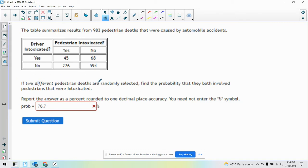Okay, so this says if two different pedestrian deaths are randomly selected, find the probability that they both involve pedestrians that were intoxicated.